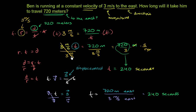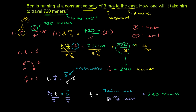In past problems I've been specifying vector direction by saying 'to the east' or 'going north,' but in more complex problems you'll define a sign convention. For one-dimensional motion, positive might mean moving east and negative means moving west. So 720 meters east becomes positive 720 meters, and 3 meters per second east becomes positive 3 meters per second. We'll explore this more in future videos.